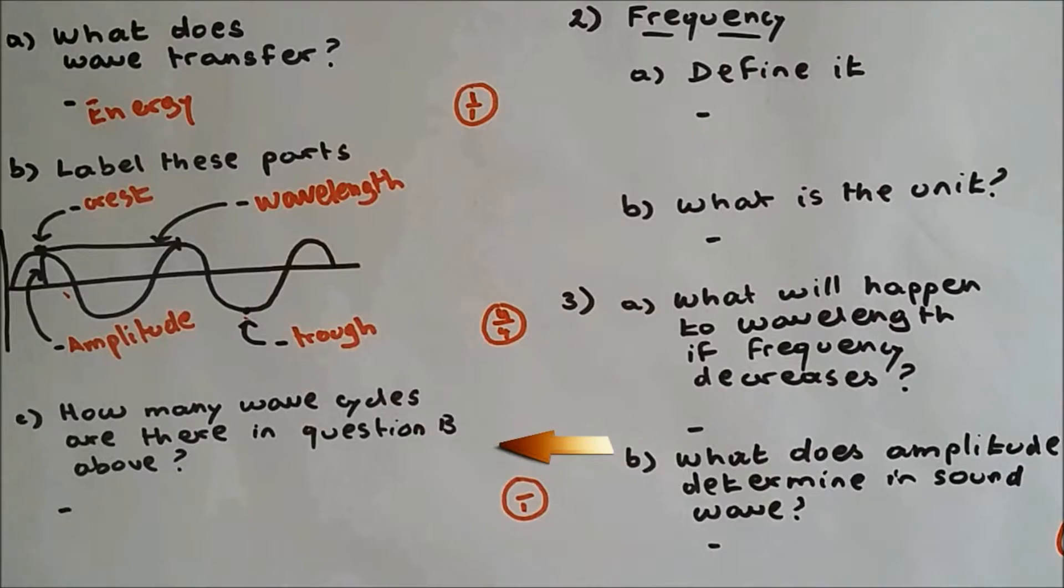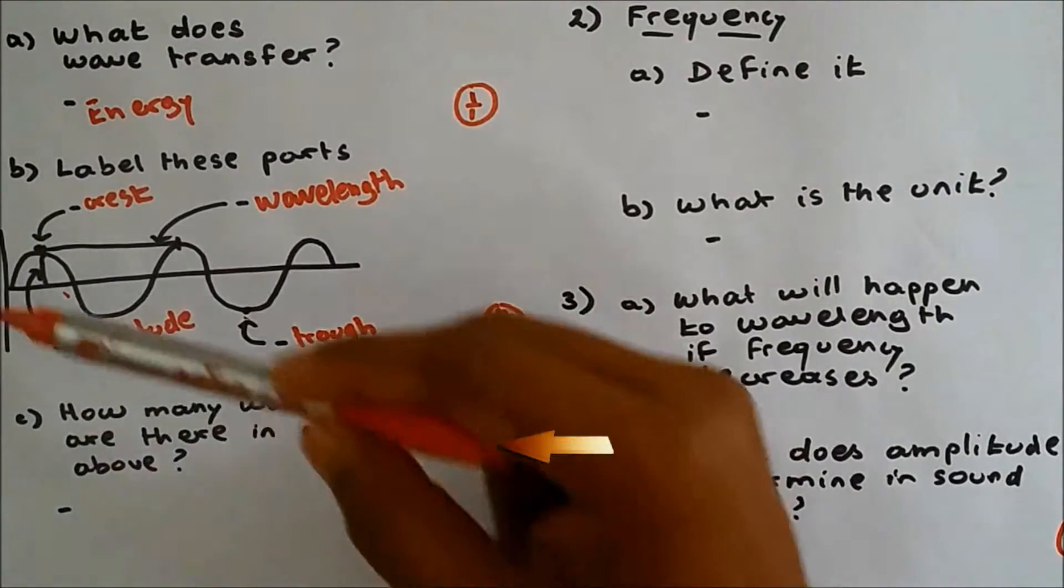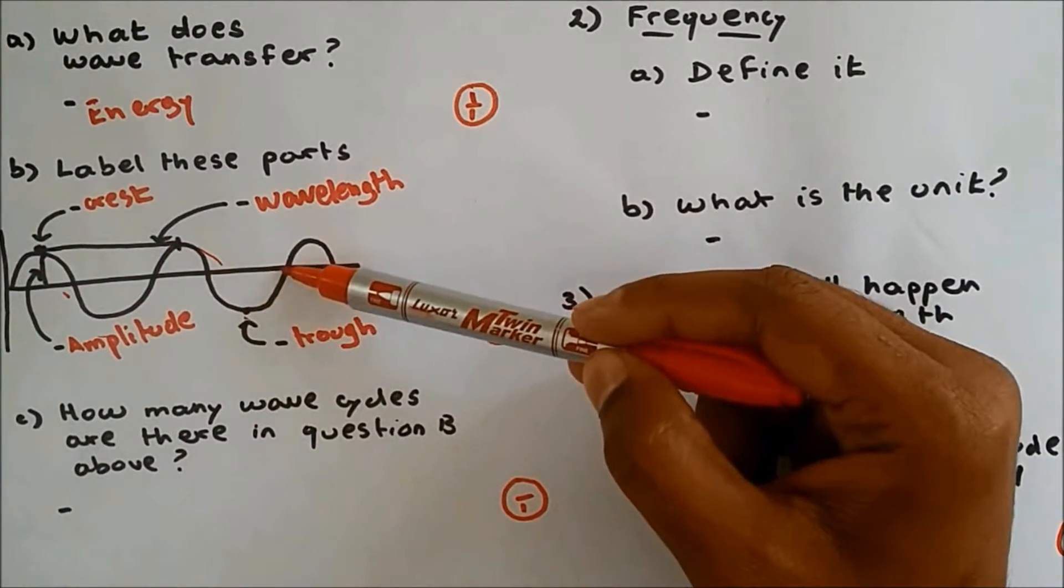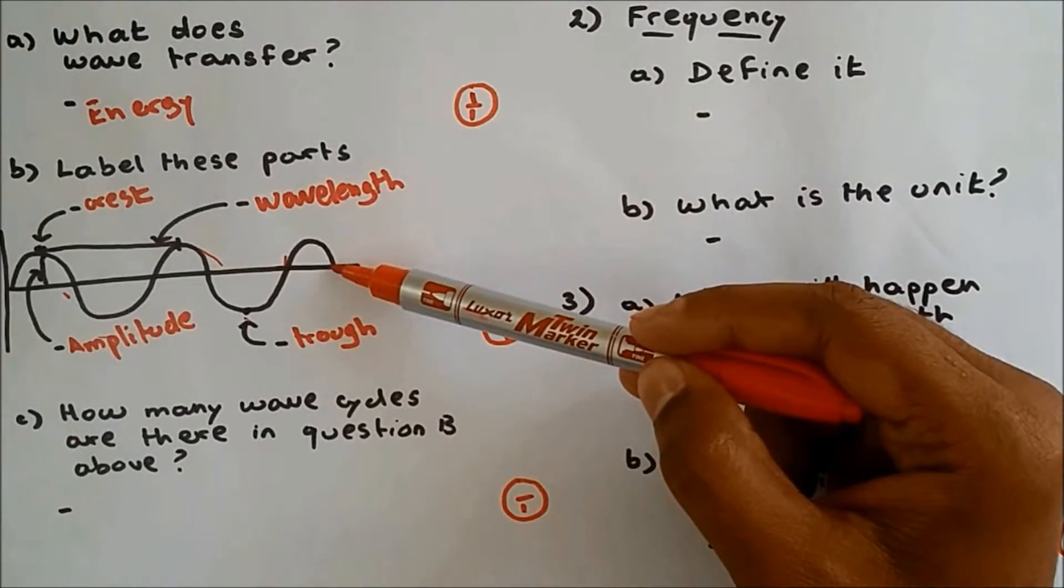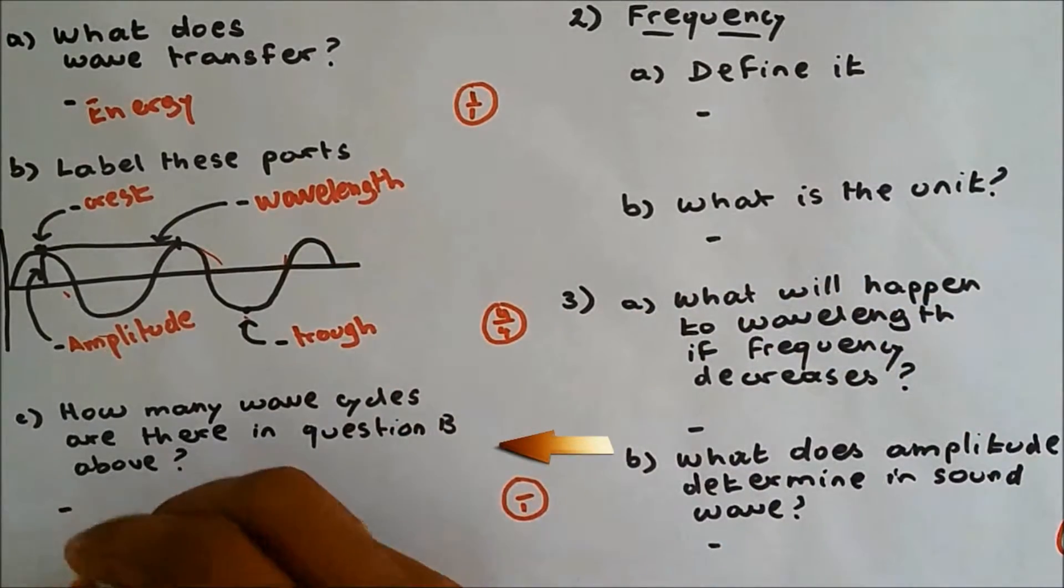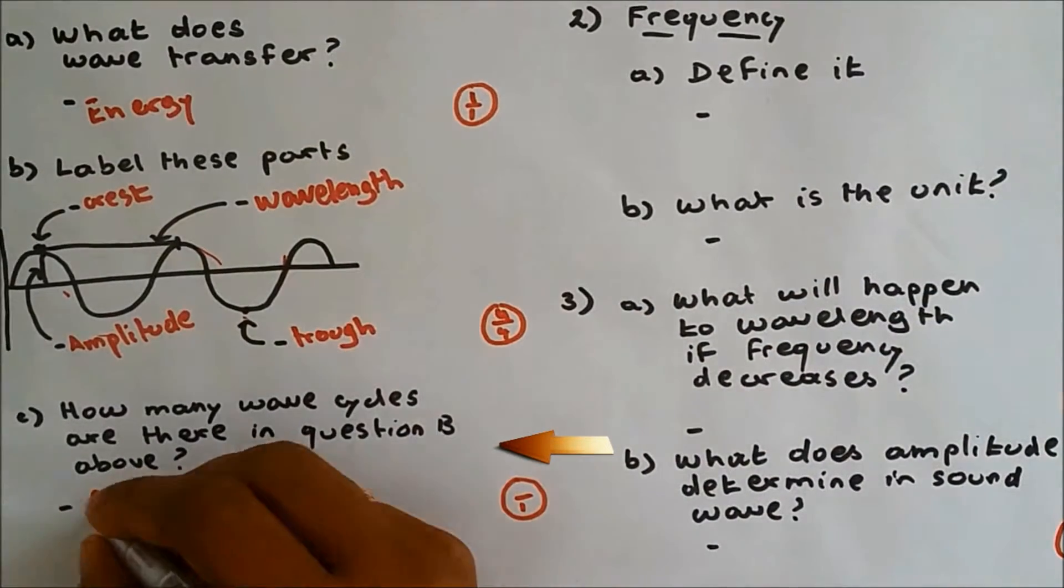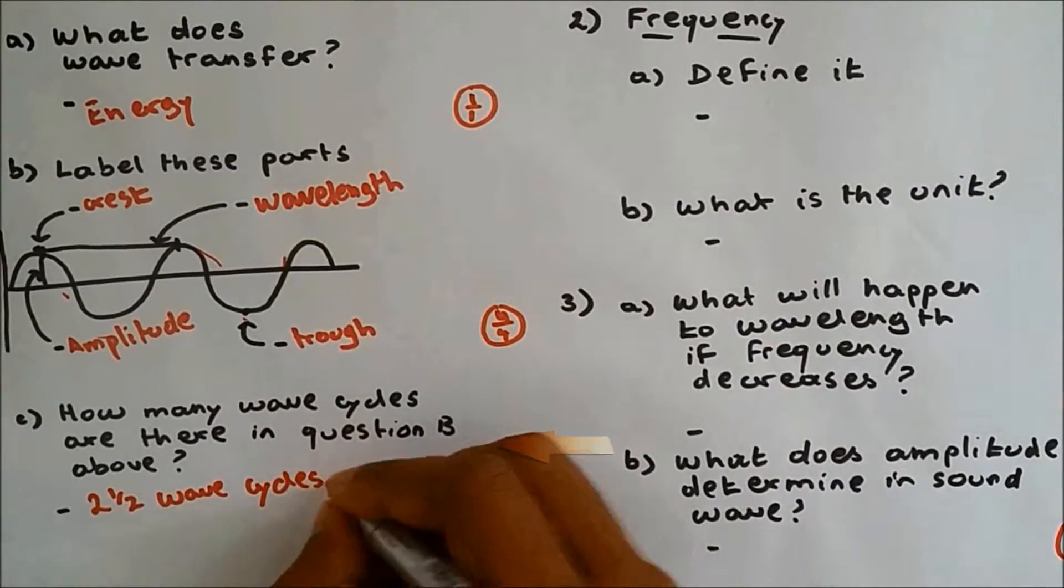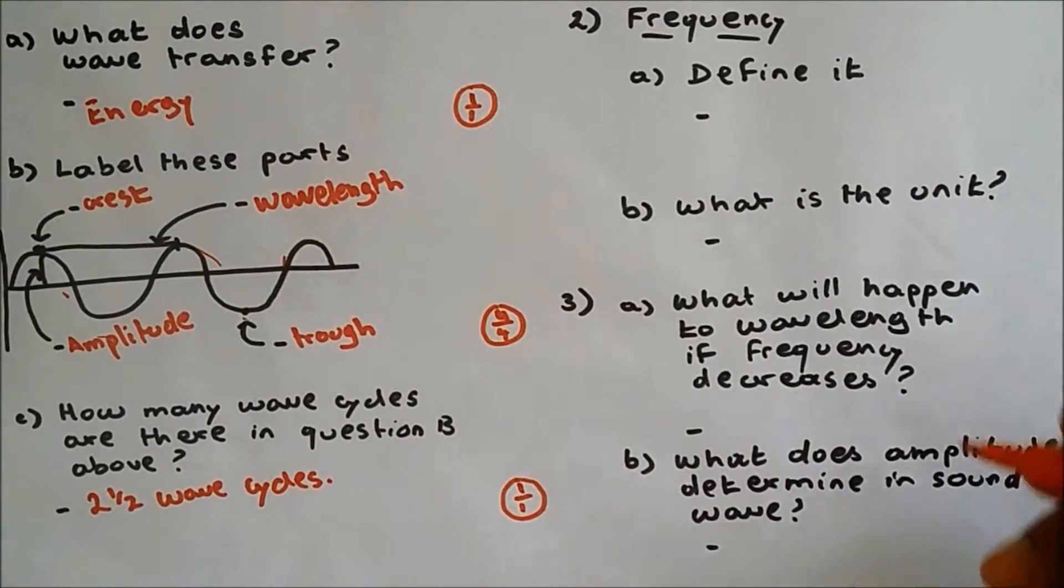See part of the question. How many wave cycles are there in question B above? From here to here is one wave. That is the second wave. And that's just a half. So it's two and a half or 2.5 wave cycles. One mark, one out of one.